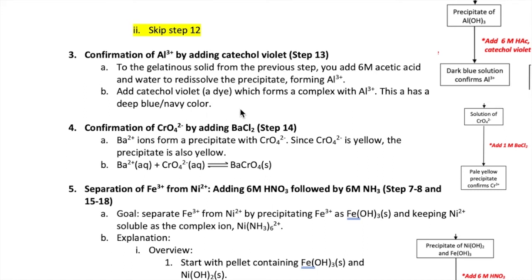Lastly, we will confirm that chromate is present by adding barium chloride to the supernatant that you had from step 11 earlier. The barium ion will react with chromate to form a yellow precipitate, which is barium chromate in this reaction shown here.